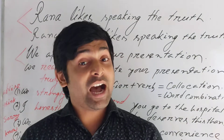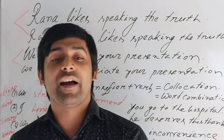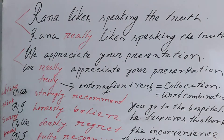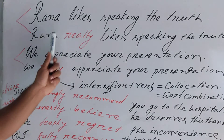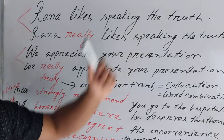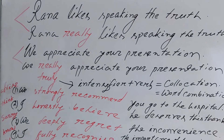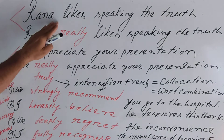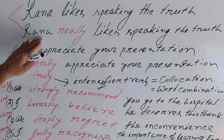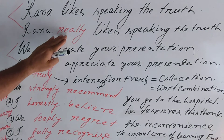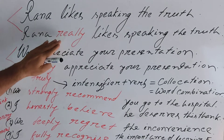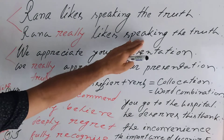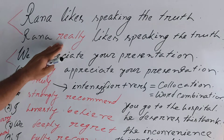What are intensifiers? Let's have a look with some examples. Please look at the whiteboard. The first example is: 'Rana likes speaking the truth.' There is no intensifier in this sentence. Now, with an intensifier marked in red: 'Rana really likes speaking the truth.' That is the intensifier — the word 'really.'